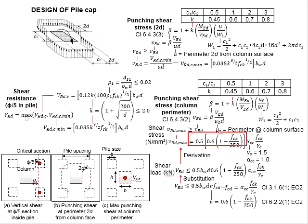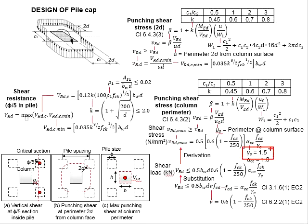The shear resistance is given by this formula. The factor alpha cc is equal to 1.0, while the factor gamma c, which is the partial factor of safety of the concrete, is equal to 1.5. The shear resistance here needs to be greater than the shear load so that the punching shear around the column perimeter check is passed.